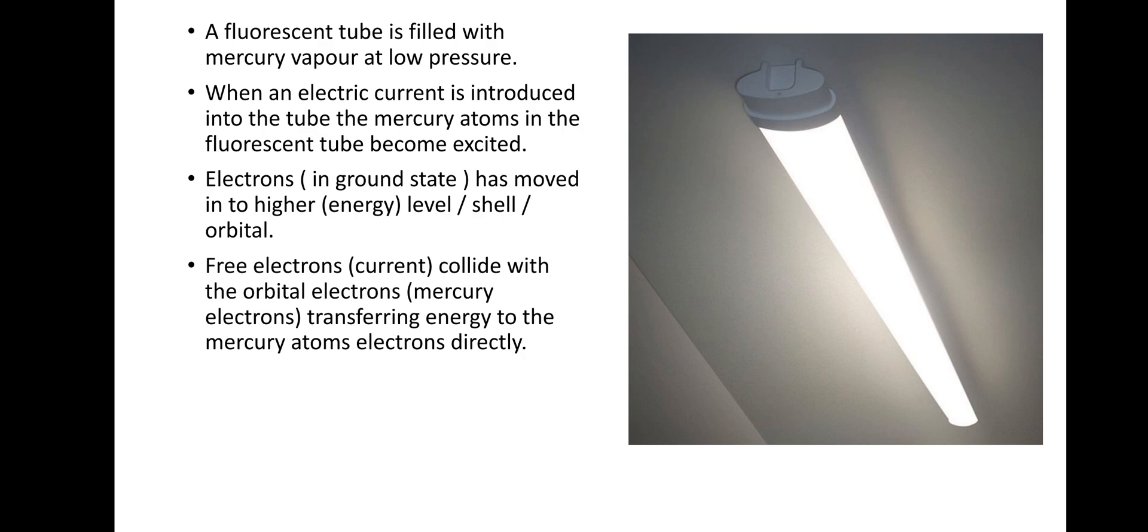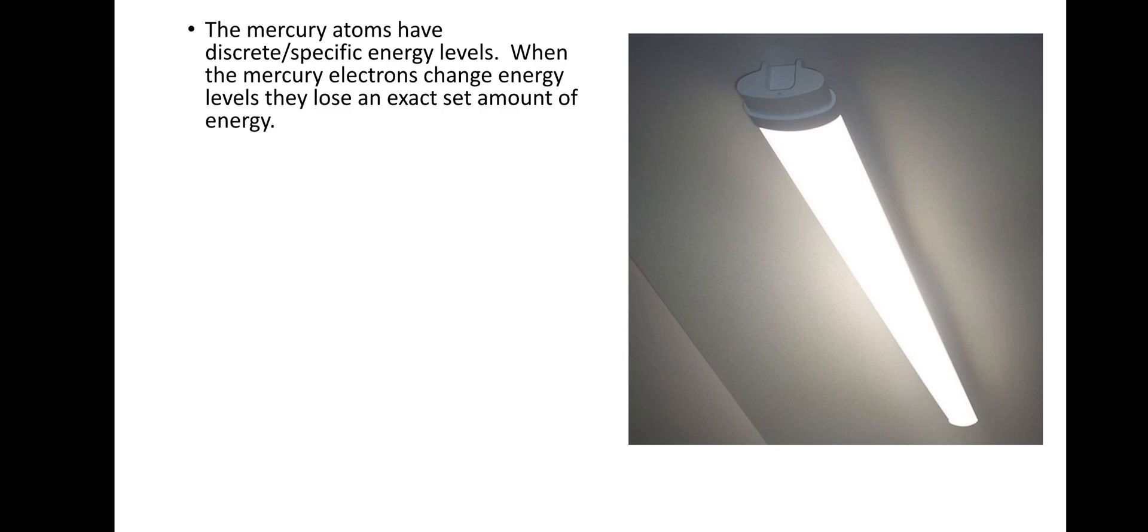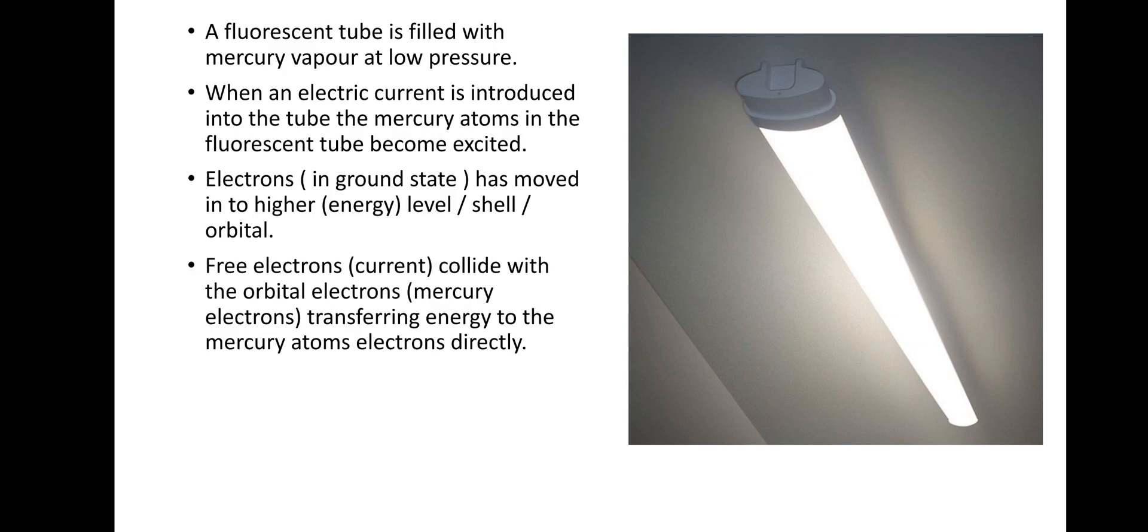So the free electrons, which is the current, collides with the orbital electrons, the mercury's electrons, and transfers energy to the mercury atoms' electrons directly. So we've got an energy transfer from the electric current into the electrons of the mercury atoms. Remember to pause if you want to take some notes, and then we'll move on.